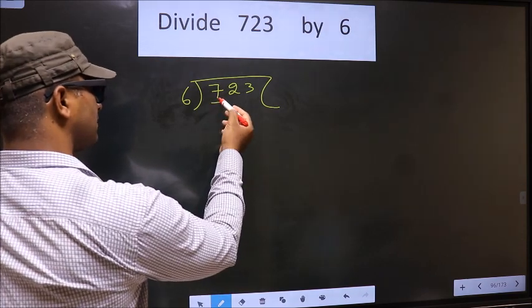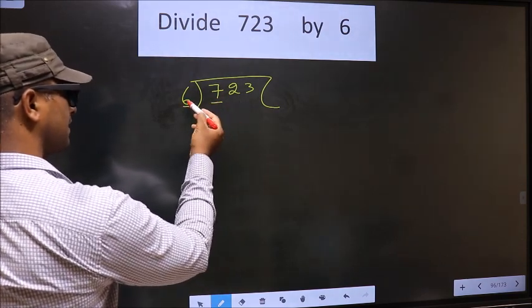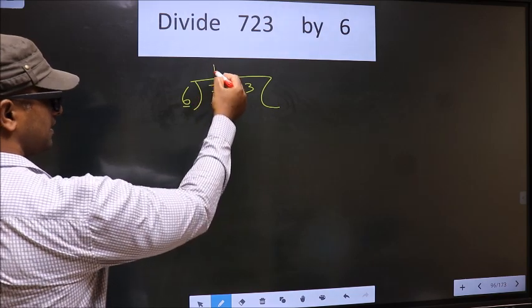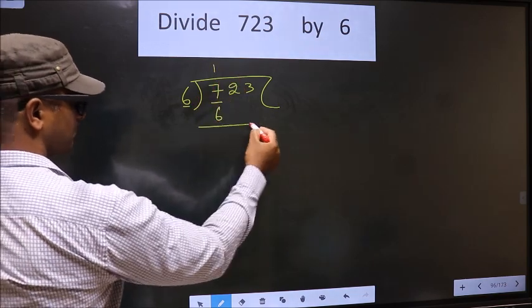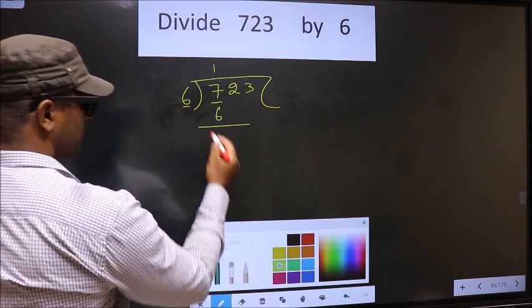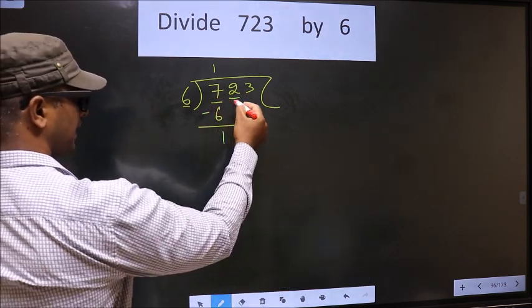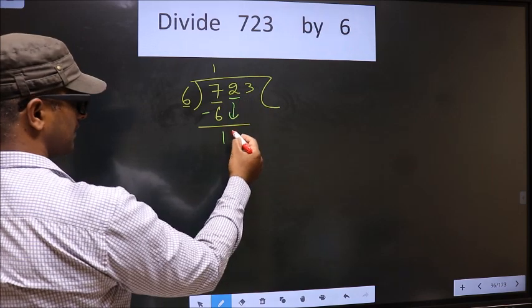Now here we have 7, here 6. Our number close to 7 in the 6 table is 6 once 6. Now you subtract 7 minus 6, 1. Now you bring down the beside number, that is 2 down.